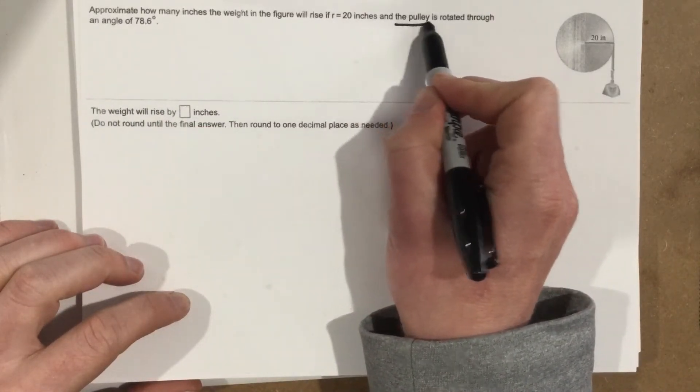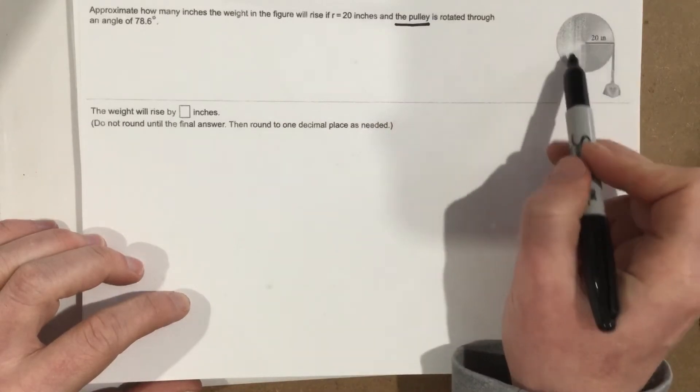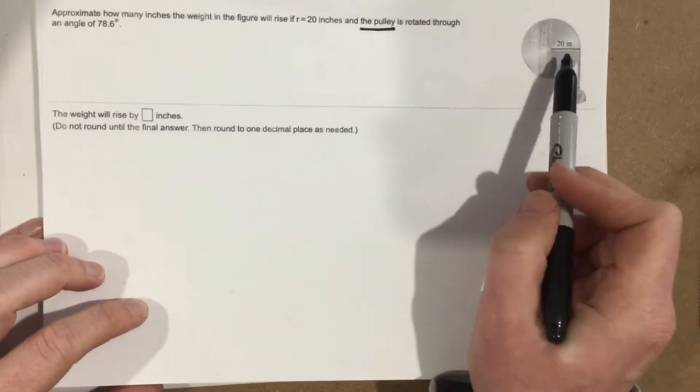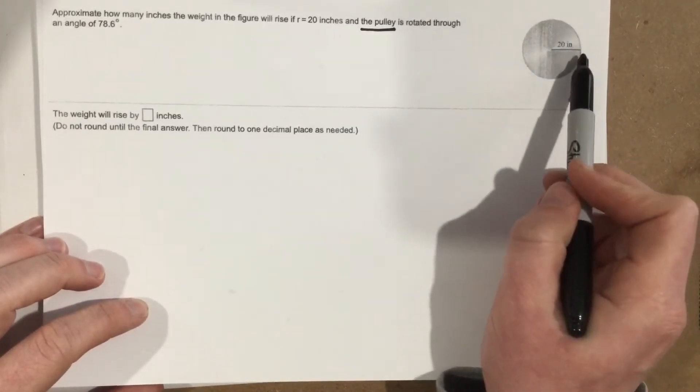This is the key, the pulley. What does a pulley do? Well as this thing wraps, so I'll slide over, as this thing wraps around here, it's gonna pull the rope up.